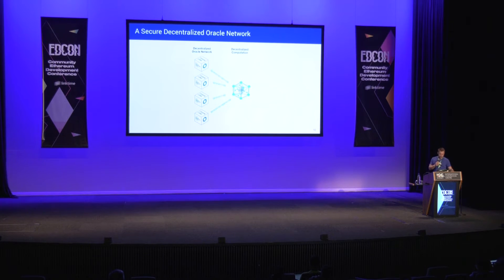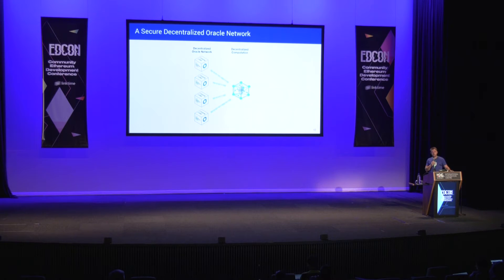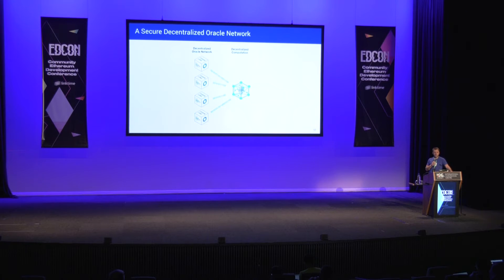Our approach brings a few levels of decentralization. One is at the node operator level. Let's say you've got a smart contract that needs a single data point — like the price of a cryptocurrency. You could have multiple independent third-party node operators query a single endpoint, say CoinMarketCap, do a commit-reveal scheme, and aggregate that data on chain. If it all matches, you can feed it into the smart contract.